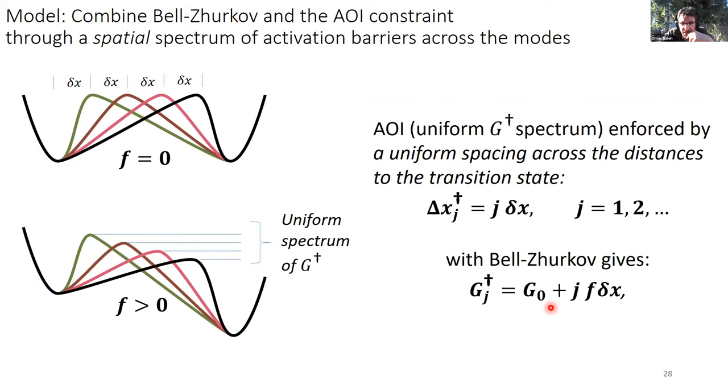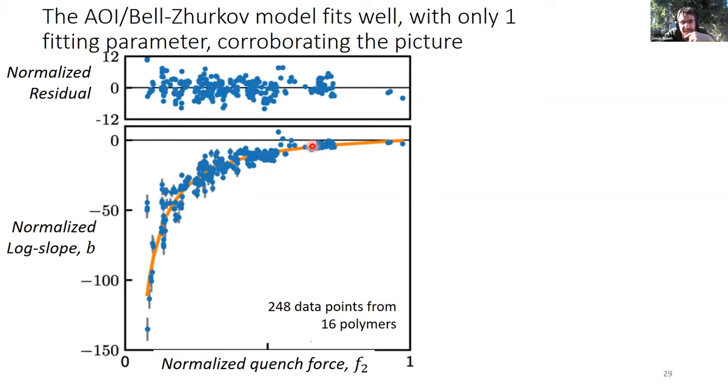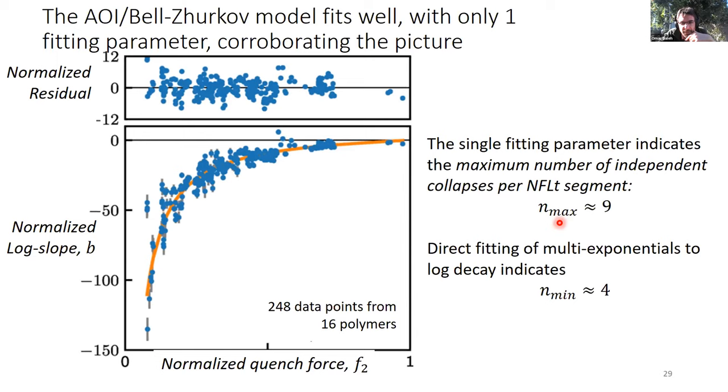So if you take this expression that corresponds from that rationale and plug it through Arrhenius, plug it through the predictions, you can get a prediction of the log slope versus force. That's the orange line that exactly matches the data, quite an extensive data set shown here. There's only one parameter in this fitting. That parameter essentially corresponds to the maximum number of independent collapses per segment. That number is about nine on max. We believe through trying to do multi-exponential fitting that the minimum is around three or four. So the number of collapses per tail domain is somewhere in this range based on this analysis.